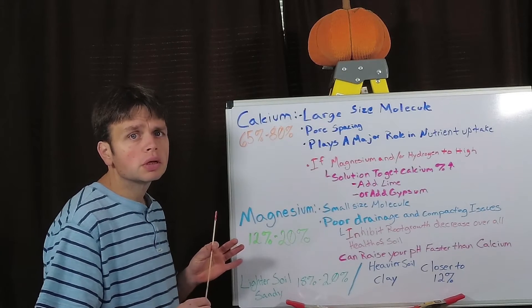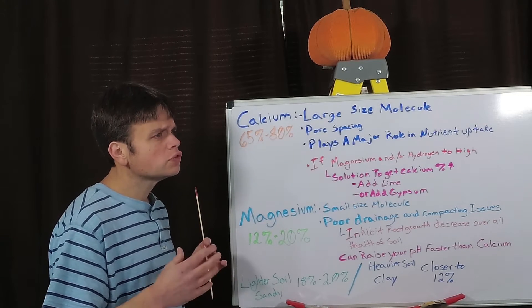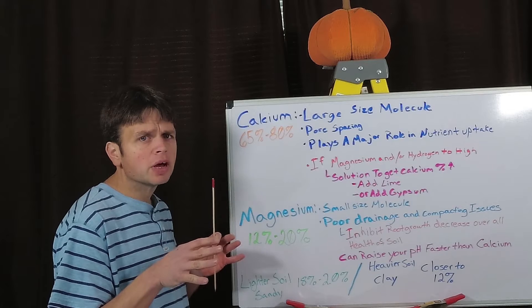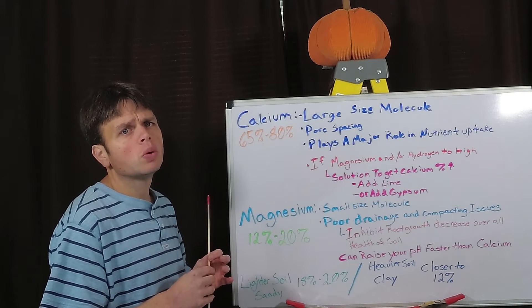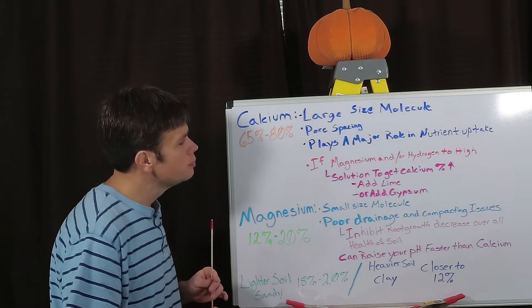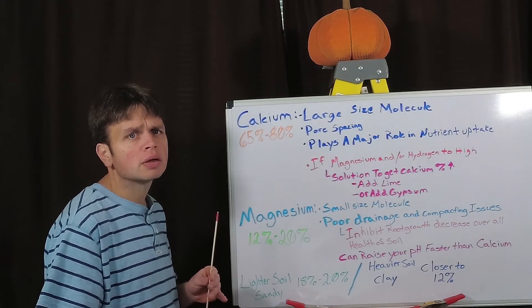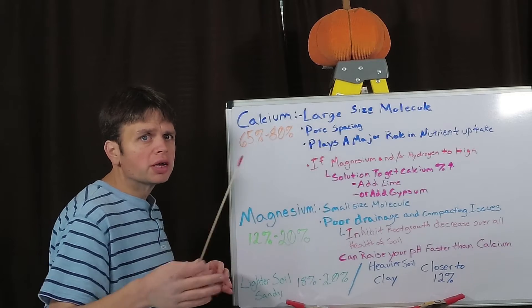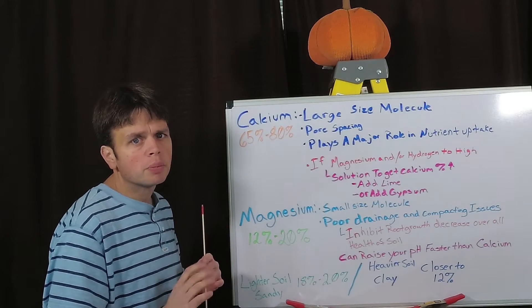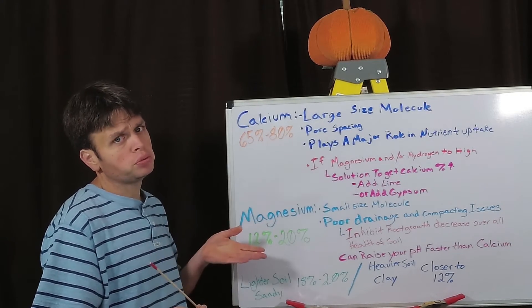Now calcium is a large size molecule and what that does for our soil is it helps to keep it loose and helps prevent compaction. So we get good air and water movement and good drainage which is pretty important. The other major role it plays is with nutrient uptake. This drives all the nutrients from your soil and helps your plant take them in much better, and then it helps redirect those nutrients throughout the plant.